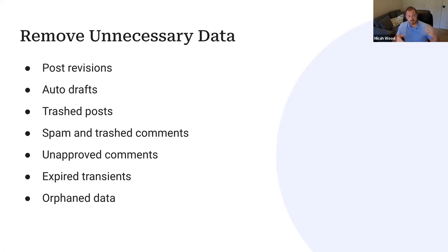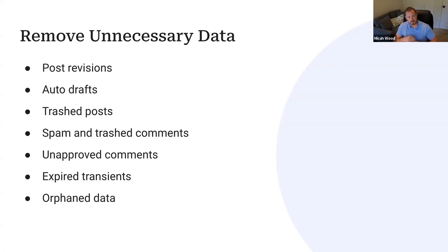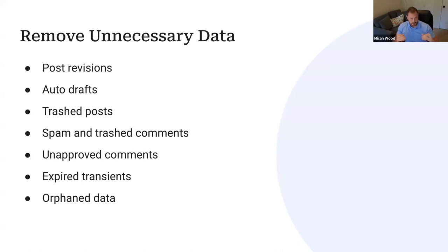WP Optimize gives you the ability to schedule these types of cleanups — for example, delete all spam older than two weeks, and have it happen once a week. You can also clean up orphaned data: when related items get deleted but data is still floating in a database table. You can clean up unapproved comments and expired transients as well. That's a bit more risky, so back up first. WP Optimize has an interface for all of this.